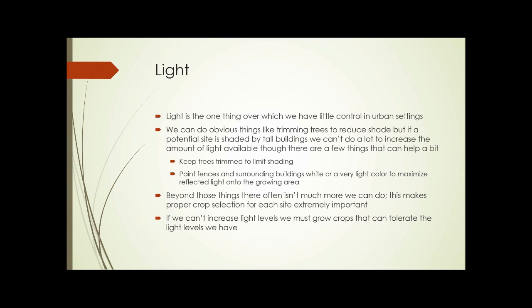Finally, for this section's last topic: light. Light is the one thing we have little control over in urban settings outdoors. We can do obvious things like trimming trees to reduce shade, but if a potential site is shaded by tall buildings, we can't do a lot to increase the amount of light available, though there are a few things we can do that will help a bit.